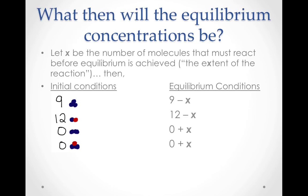What then would be the equilibrium concentrations? If we let x be the number of molecules that must react before equilibrium is achieved, then we can write the equilibrium expression using x, set it equal to the equilibrium constant K, and solve for x. In calculations such as these, x is known as the extent of the reaction because it expresses how much the reaction needs to shift to the left or to the right. In our example, the equilibrium concentrations would then be 9 minus x, 12 minus x, x, and x, respectively.